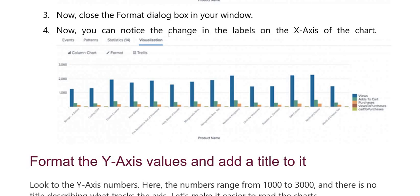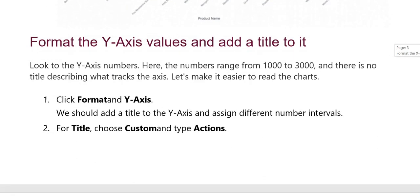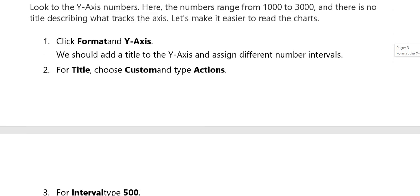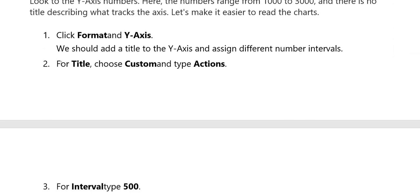Fourth, you have to change labels on the X-axis of the chart. Here you have to represent the Y-axis and here the X-axis. Format Y-axis values and add a title to it. Click on Format and Y-axis, then choose custom and type the actions.